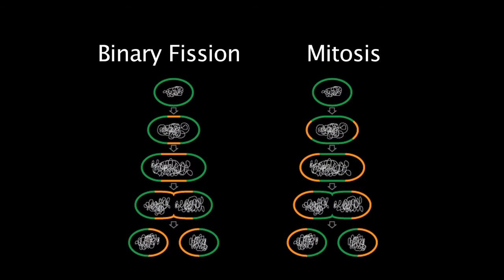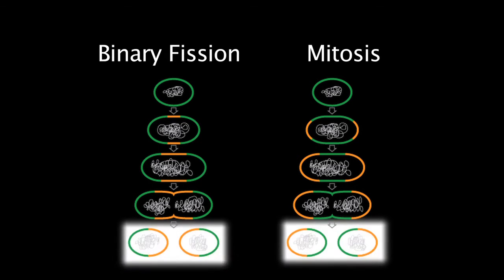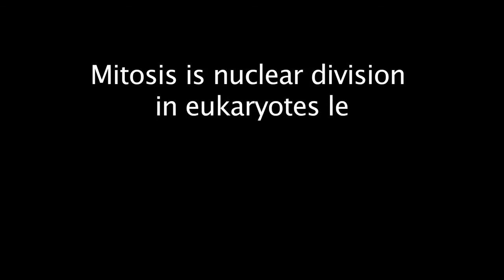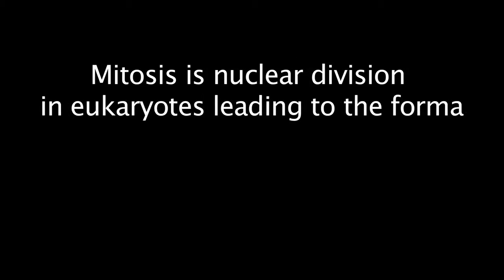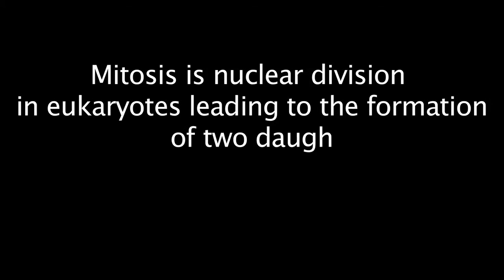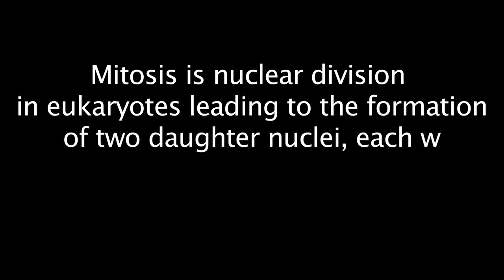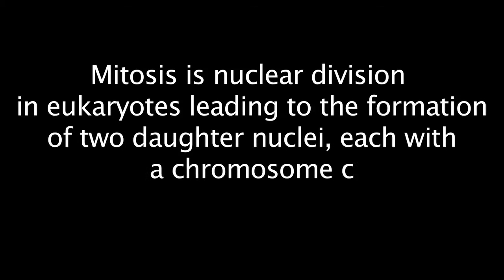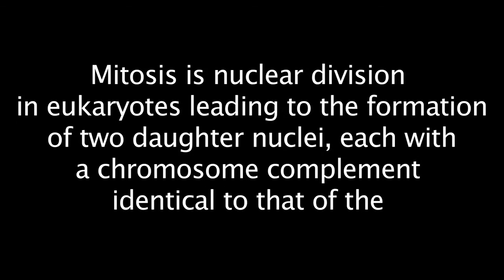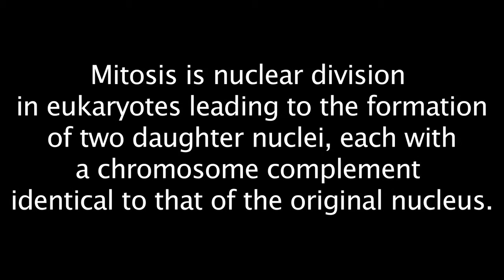Binary fission and mitosis are similar in that cell division by either one produces two genetically identical cells. Mitosis is nuclear division in eukaryotes, leading to the formation of two daughter nuclei, each with a chromosome complement identical to that of the original nucleus.